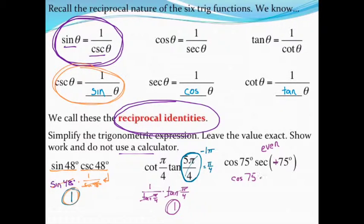I'm going to rewrite this second piece: secant I'm going to rewrite as 1 over the cosine of 75 degrees, positive 75 degrees. So once again I can see that cosine of 75 crosses out, again leaving behind just 1 as my simplified answer. That's how these reciprocal identities work to simplify trigonometric expressions. In our next couple of videos we'll take a look at some other identities we can use to do some simplifying.